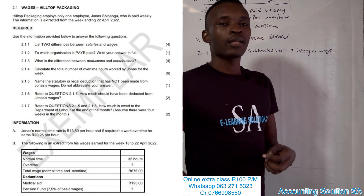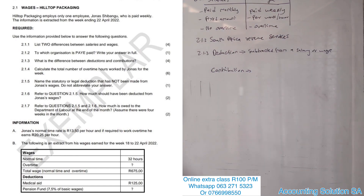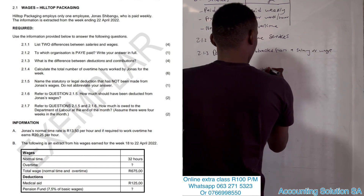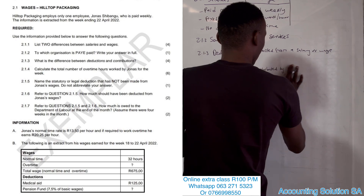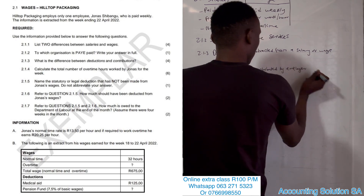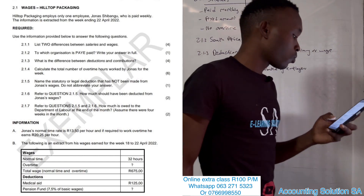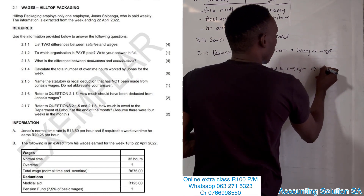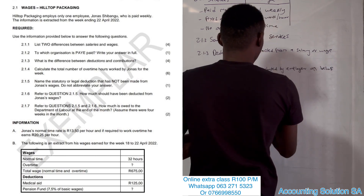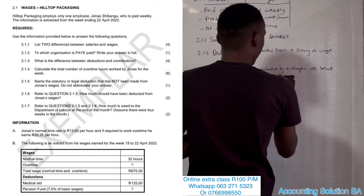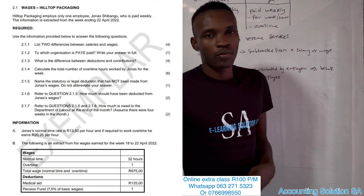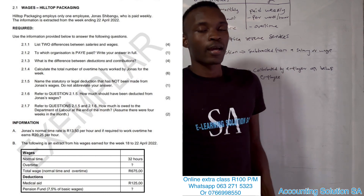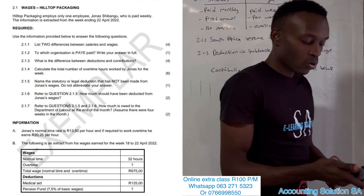When they deduct tax, pension fund, or medical aid — those are called deductions. Contributions, on the other hand, are contributed by the employer on behalf of the employee. The employer is the boss — the person who has employed you to work for a company. For example, for UIF, whatever you contribute, the company also contributes the same amount so that during unemployment the government can give you some cash while you look for a job.